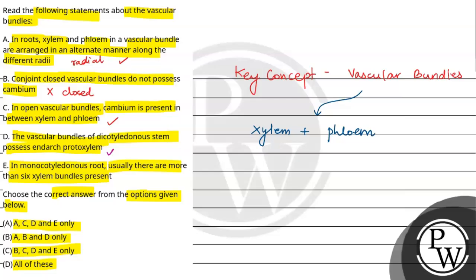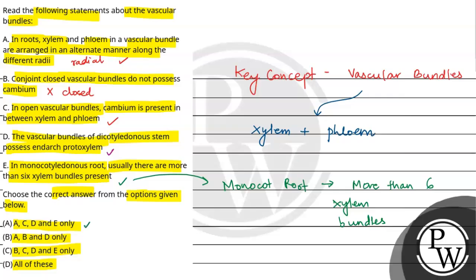The fifth statement says in monocot roots, usually there are more than six xylem bundles present — this is also correct. In monocot roots, more than six xylem bundles are usually seen, whereas dicot roots have fewer xylem bundles. So the true statements are A, C, D and E. Therefore, the final answer to this question is option A. Best of luck!